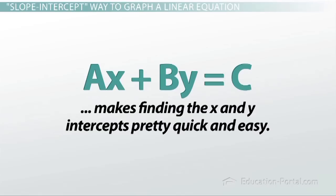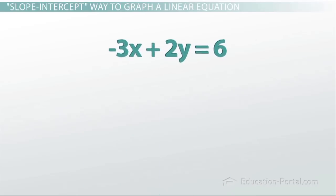So here we have a question that asks us to graph the line negative 3x plus 2y equals 6.